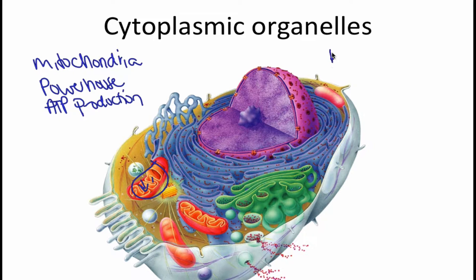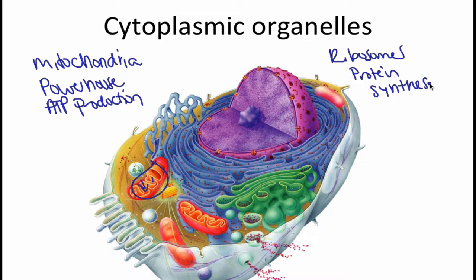Next up, let's talk about the ribosomes. Ribosomes are all of these little red dots and they are responsible for protein synthesis. Ribosomes are found in two different locations: the first is free within the cytoplasm, and the second location is studded to the endoplasmic reticulum.